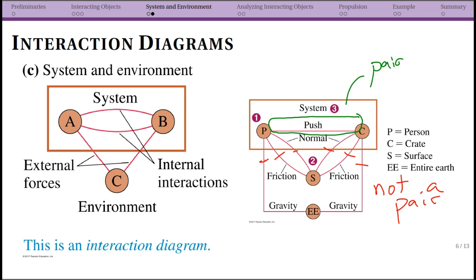For any of these forces where it's actually leaving the system and going into the environment, you don't have a pair. Now just to clarify, there is still a reaction force, but the reaction force would be acting on your surface. It would be acting on the earth, and since those aren't part of your system, you're not actually drawing free body diagrams for them.